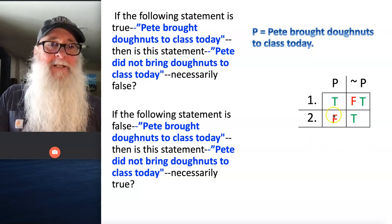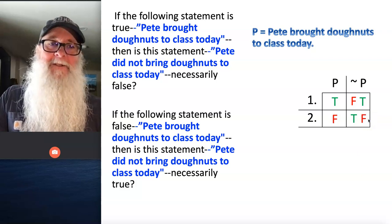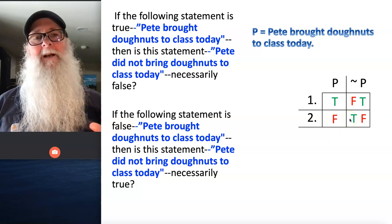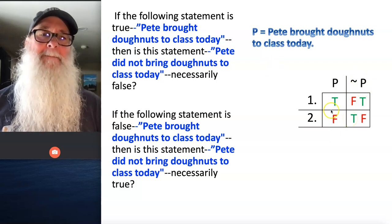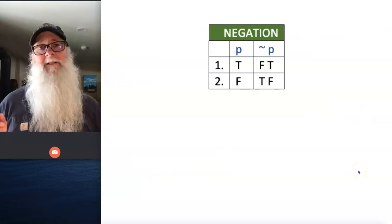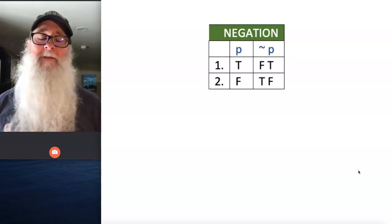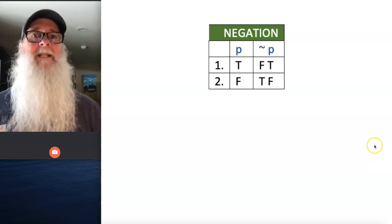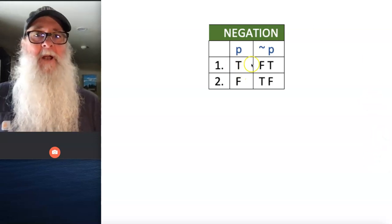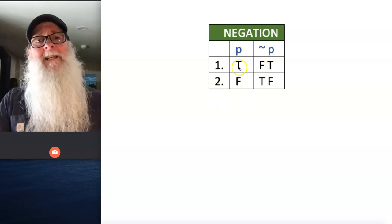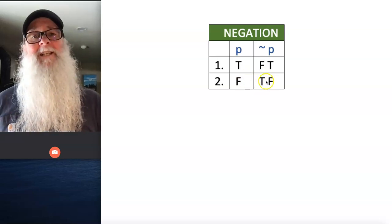If P is false on line two, it has to also be false on line two there. And now you can see in this table a representation of P and tilde P — they have the opposite truth values. When P is true, tilde P is false. When P is false, tilde P is true. And what we're seeing here is the relation of negation. The relation of negation holds for any statement, not just ones about Pete and donuts — any statement is either true or it's false. Anytime a given statement is true, its negation is false, and anytime a statement is false, its negation is true.